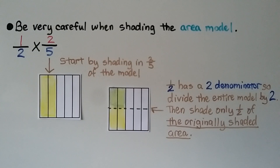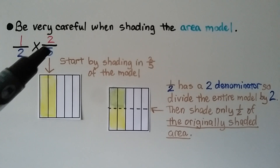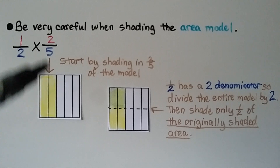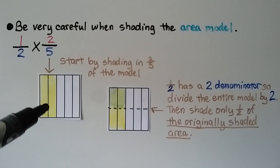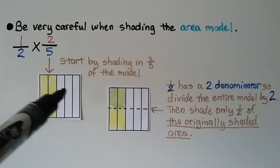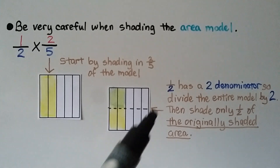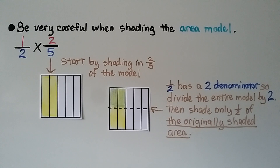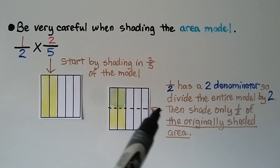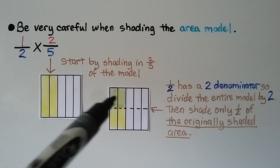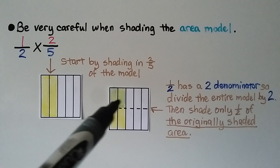Please be very careful when shading the area model. For one-half times two-fifths, we start by shading in two-fifths — the multiplier, the second factor — shading two of the five parts. Since we're multiplying by one-half, the denominator is two, so we divide the entire model in half going horizontally. Then we shade only half of the originally shaded area.